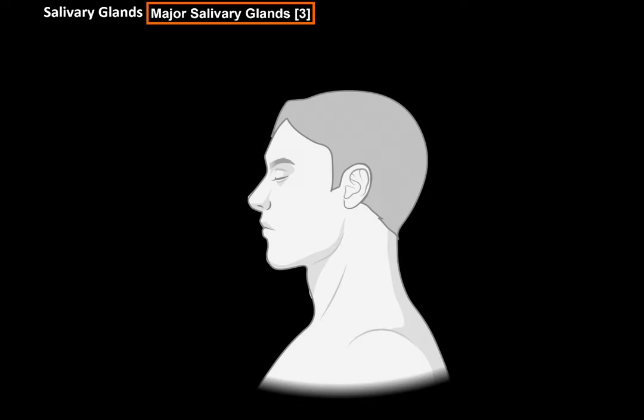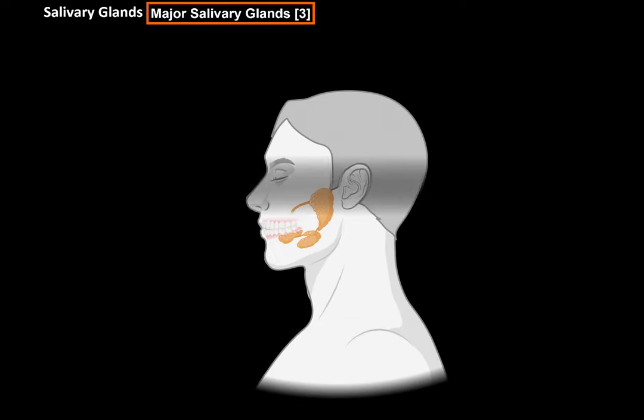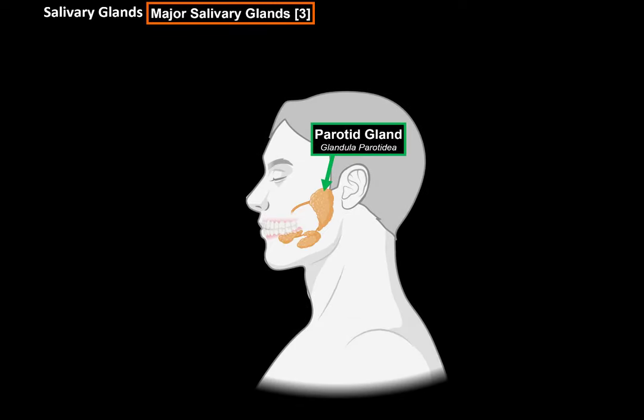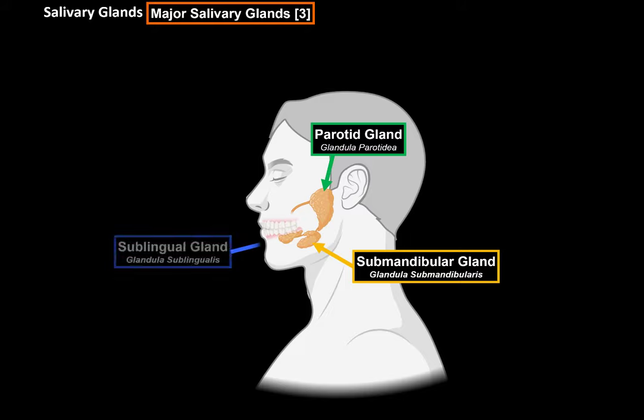Then we have the major salivary glands. They are the parotid gland, the submandibular gland, and the sublingual gland.